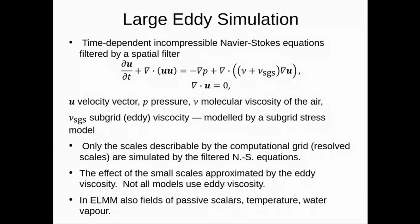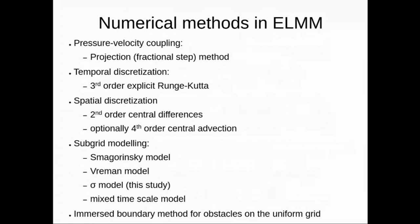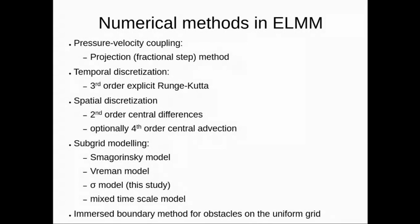The equations are simplified here because we also have passive scalars—fields of temperature or water vapor—in the model. The numerical methods include the projection method for pressure-velocity coupling, which connects the continuity and momentum equations. Temporal evolution uses a third-order explicit Runge-Kutta method, second-order central differences for spatial discretization, several subgrid models, and an immersed boundary method to describe obstacles on the uniform grid.